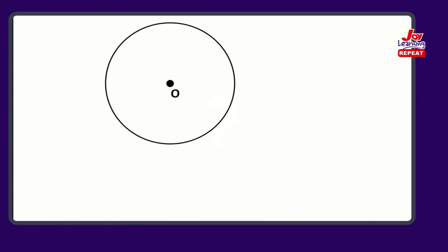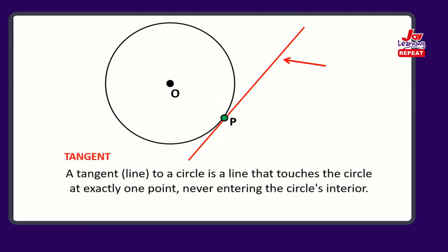What is a tangent? Given a circle with center O, if we have a point P and a line through P touching the circle at just that point P and no other point, what we have is a tangent. A tangent line to a circle is a line that touches the circle at exactly one point, never entering the circle's interior. If it enters the circle's interior, it ceases to be a tangent - it becomes a secant.